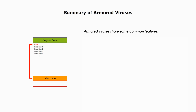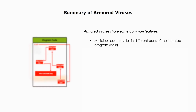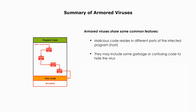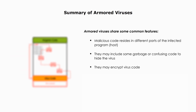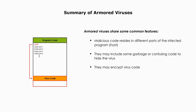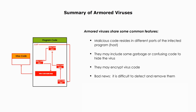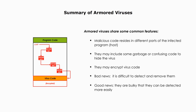Armored viruses share some common features. Malicious code resides in different parts of the infected program. They may include some garbage or confusing code to hide the virus, and they may encrypt the virus code. Thus, the bad news is it is difficult to detect and remove them. But at the same time, good news — they are bulky, so bulky that they can be detected more easily. I hope this video is useful.